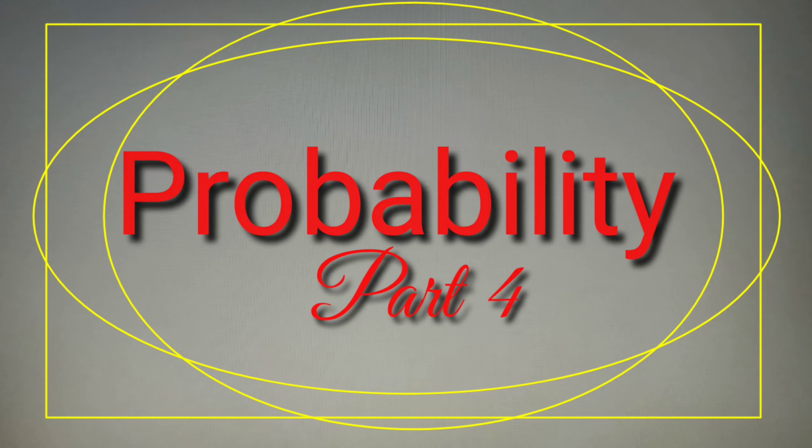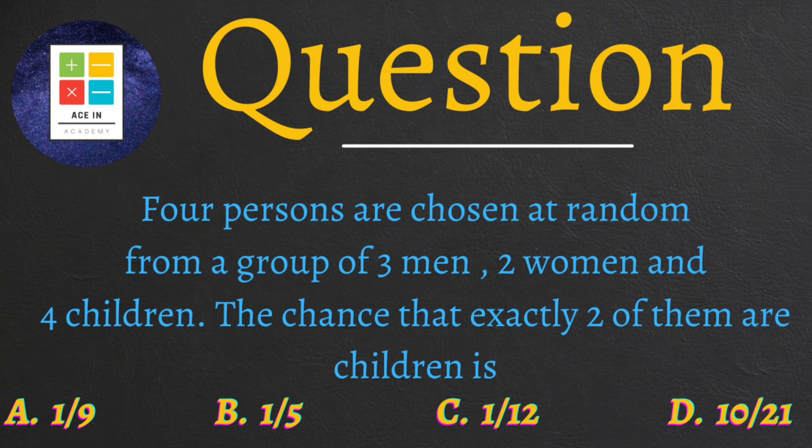Now the question is as follows. Four persons are chosen at random from a group of three men, two women and four children. The chance that exactly two of them are children is...